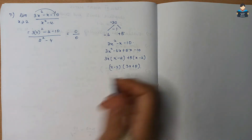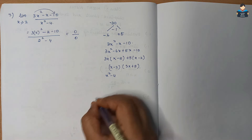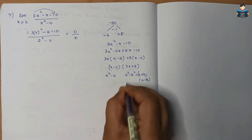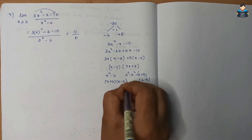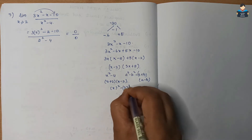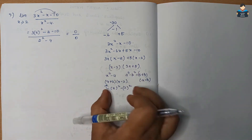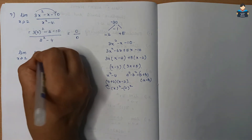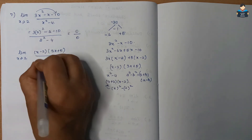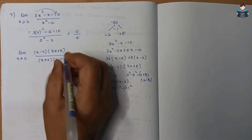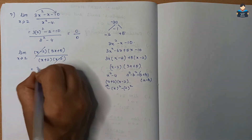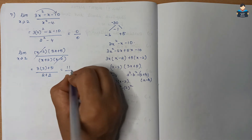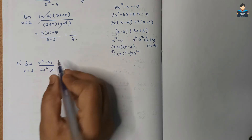So the answer for question 7 is 11/4. Eighth question: limit x tends to 3 of (x^4 - 81) divided by (2x squared - 5x - 3). Substituting x = 3: numerator = 81 - 81 = 0, denominator = 18 - 15 - 3 = 0. So 0/0 form — we must simplify.